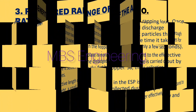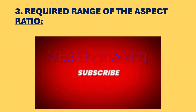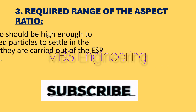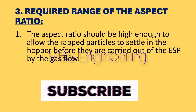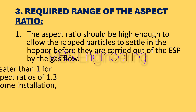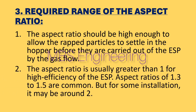Next, we are going to understand the required range of the aspect ratio in the ESP. Point 1: The aspect ratio should be high enough to allow the rapped particles to settle in the hopper before they are carried out of the ESP by the gas flow. Point 2: The aspect ratio is usually greater than 1 for high efficiency ESPs. Aspect ratios of 1.3 to 1.5 are common, but in some installations it may be around 2.